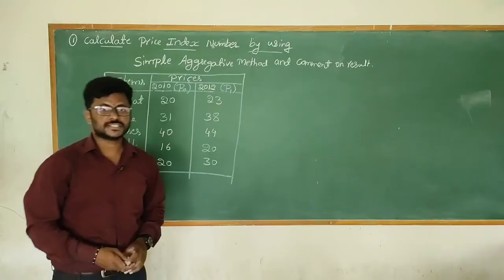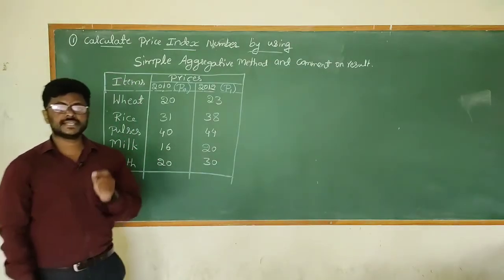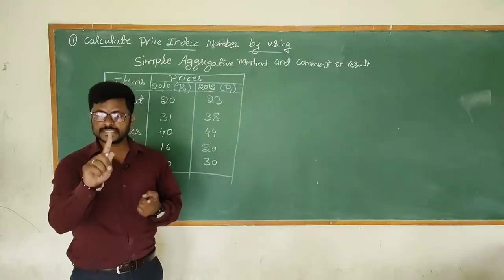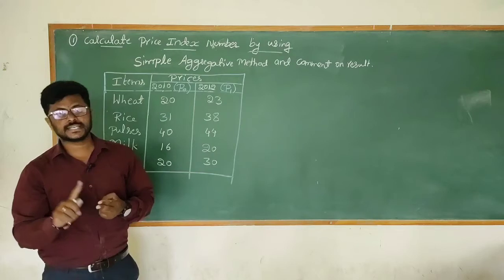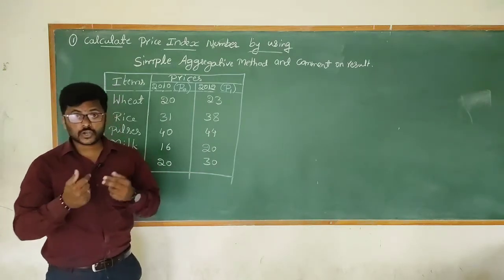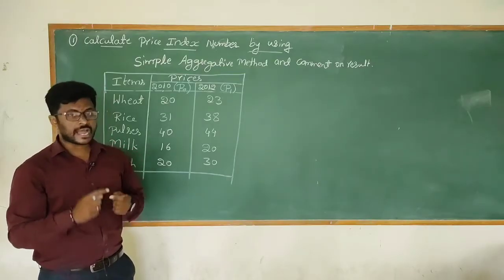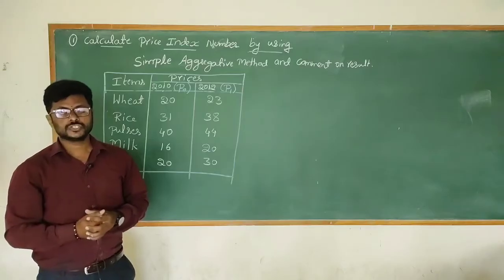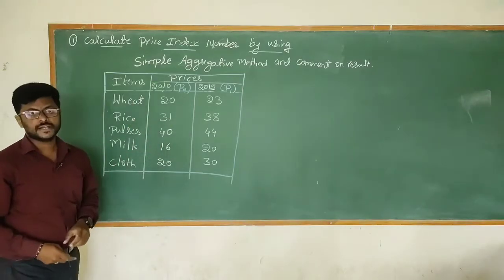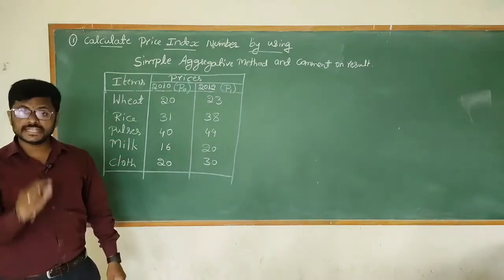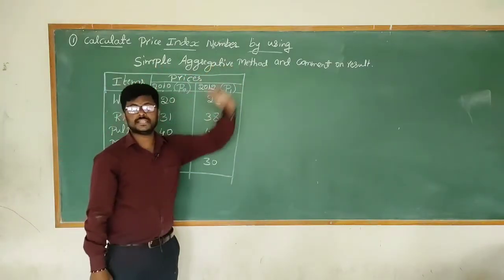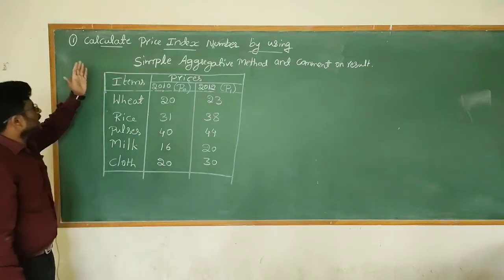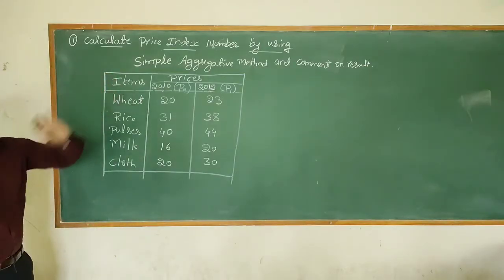Good morning students. In the last session we discussed price index numbers. Price index numbers are classified into two types: unweighted price index number and weighted price index number. Unweighted price index is further classified into unweighted aggregative price index number and unweighted average price index number. In this session we will cover the first topic — unweighted aggregative price index number, also known as the simple aggregative price index number.